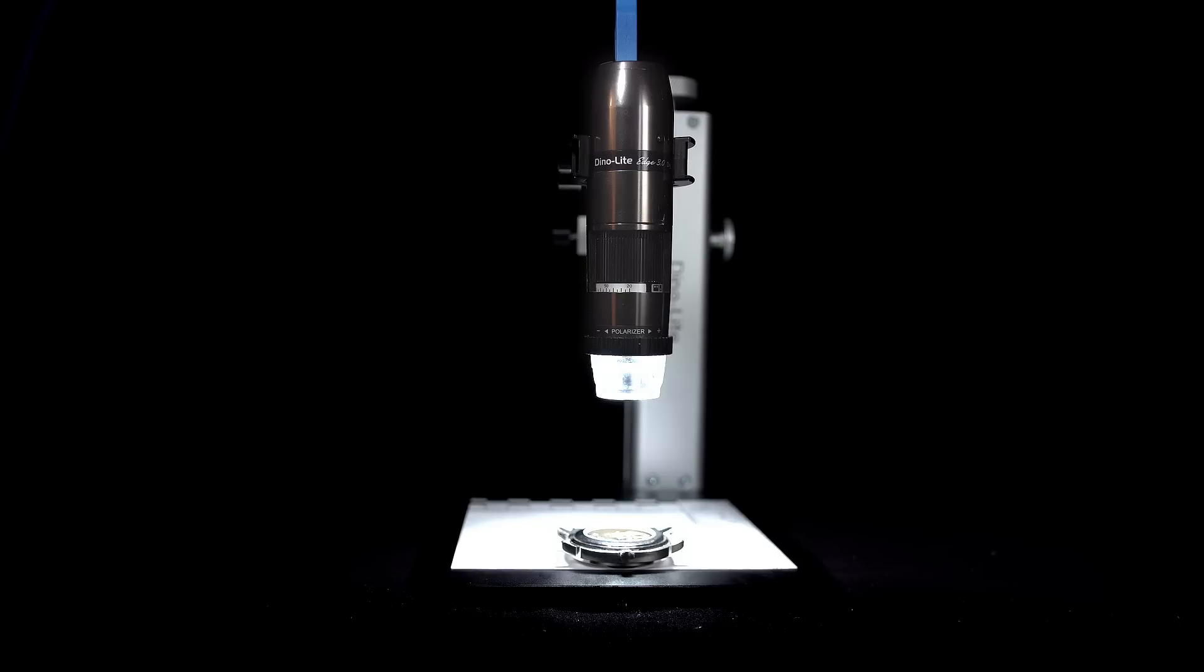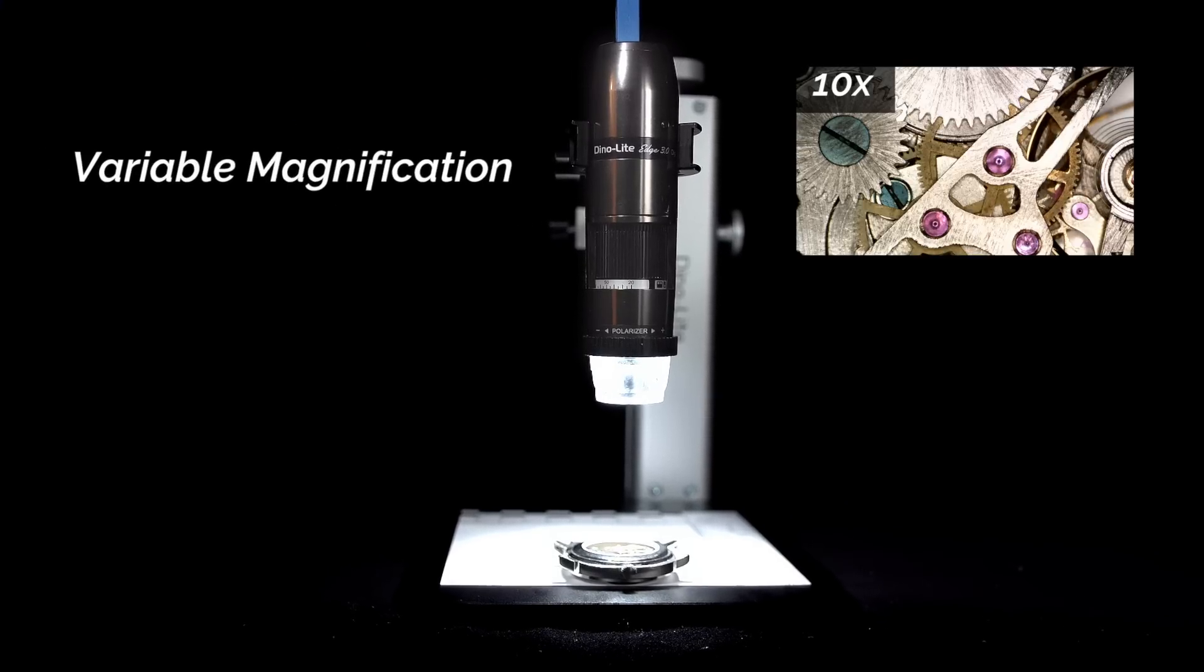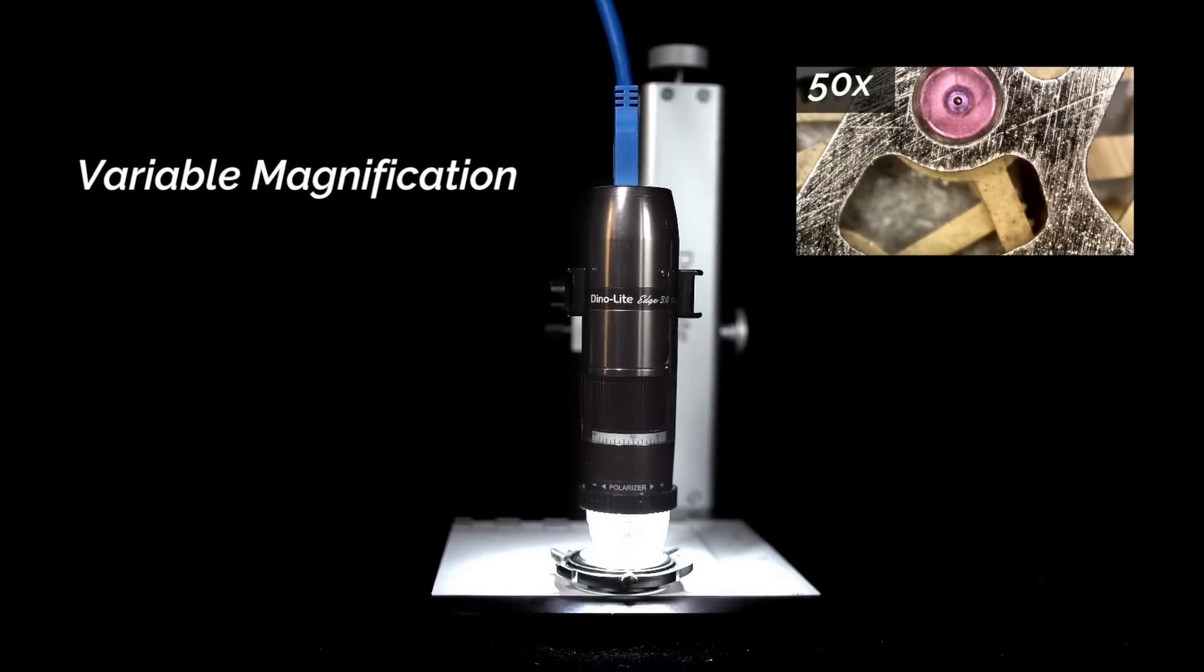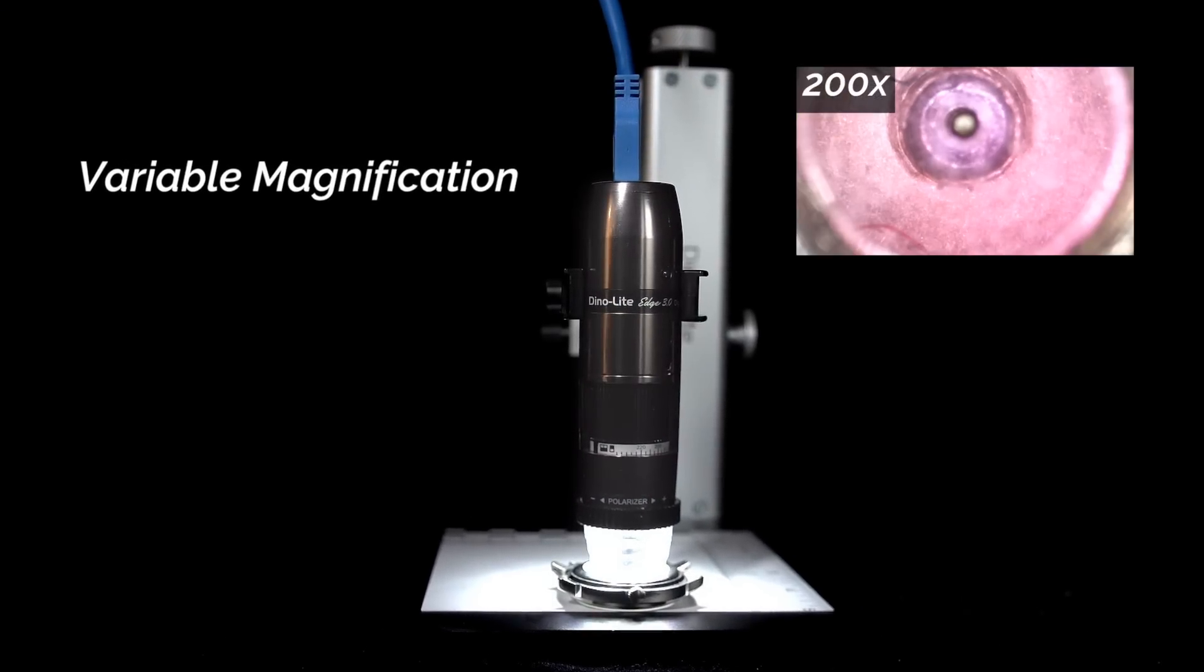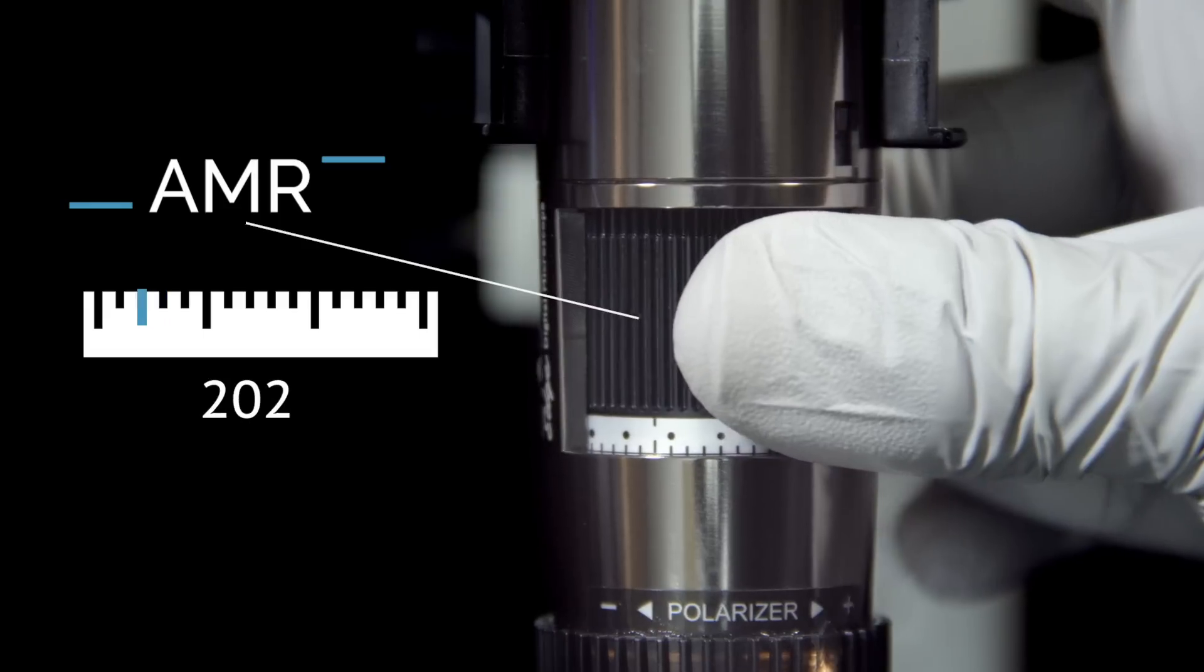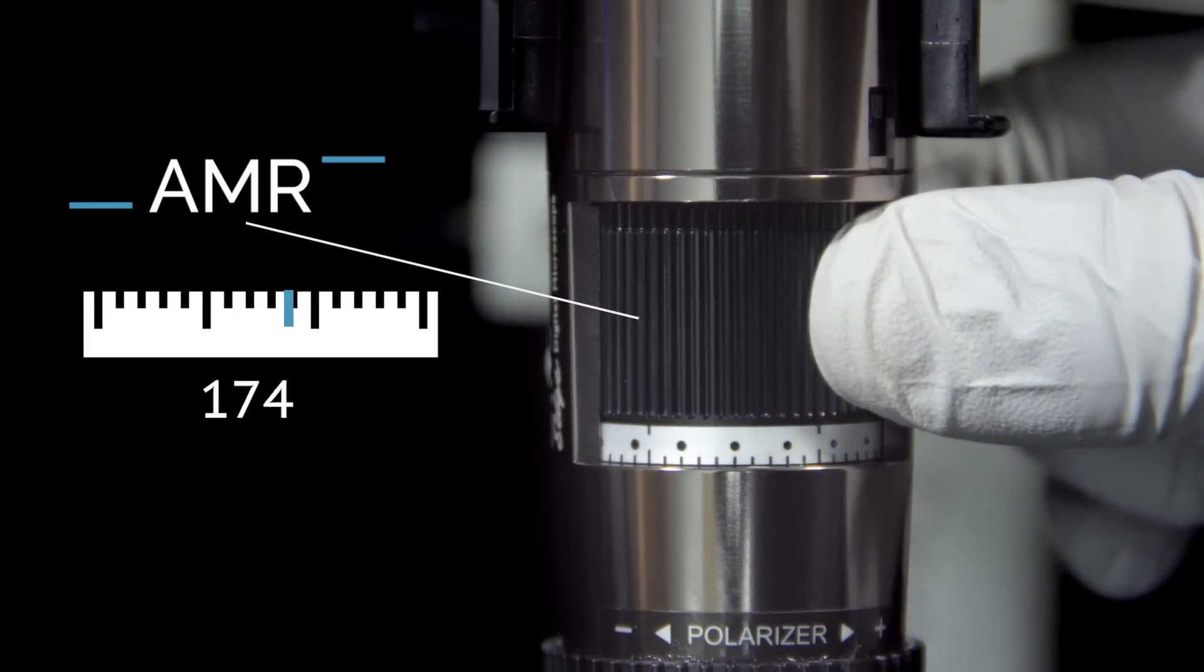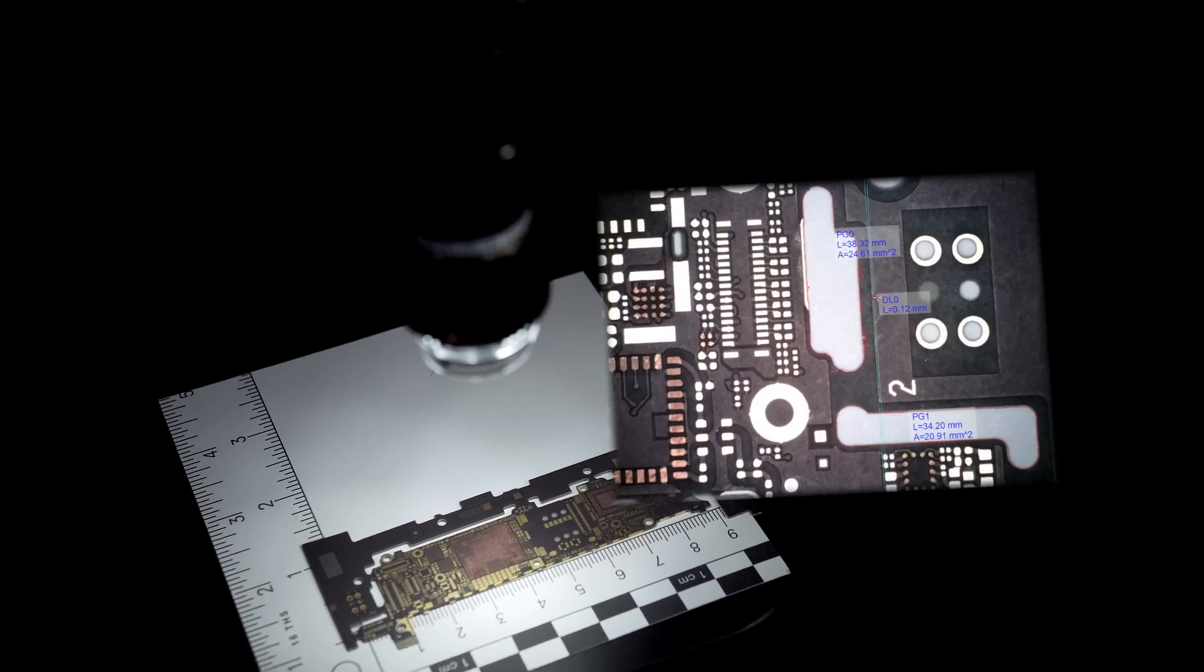Our variable magnification lens allows you to achieve a wide range of magnifications simply by changing your working distance and refocusing. And our AMR feature takes the guesswork out of knowing your current magnification by displaying this information directly on your screen.